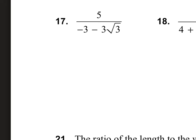On numbers 17, 18, 19, and 20, all of the denominators have a root with a plus or minus sign. We're going to take advantage of the difference of two squares property: (a + b)(a − b) = a² − b². We'll use this property to rationalize the denominator.